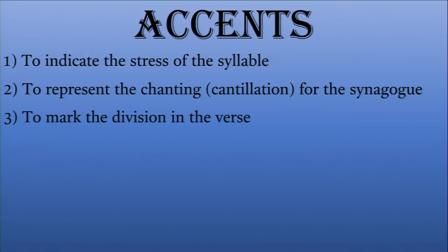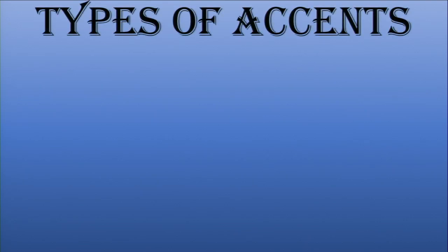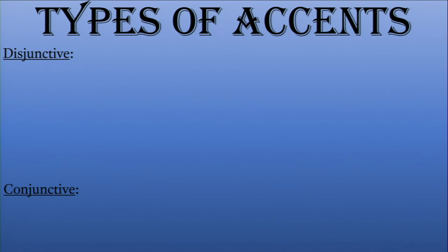Another element of these accents is that they tell us where to divide the sentence, clause, or verse itself — they mark the syntax of the verse for us. There are disjunctive accents where they make a separation between words or clauses, and then there are conjunctive accents where they tell you not to separate but to read the words together.